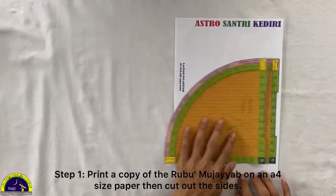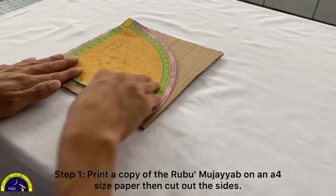Step 1: Print a copy of the Rubu' Mujayyab on an A4 size paper, then cut out the sides.